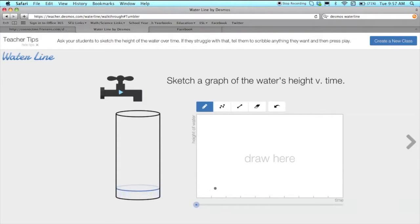As they are sketching or making points on their graph, they can see the corresponding height on the beaker. At any time, they can replay the animation. It will always show the actual water height as well as the height that they plotted for each point in time.